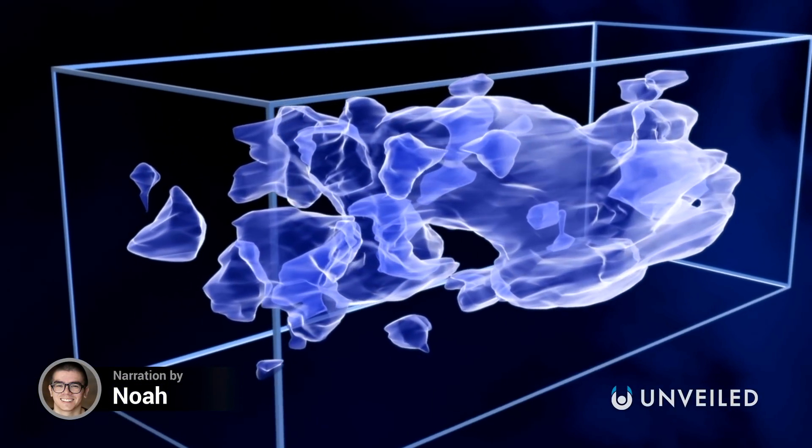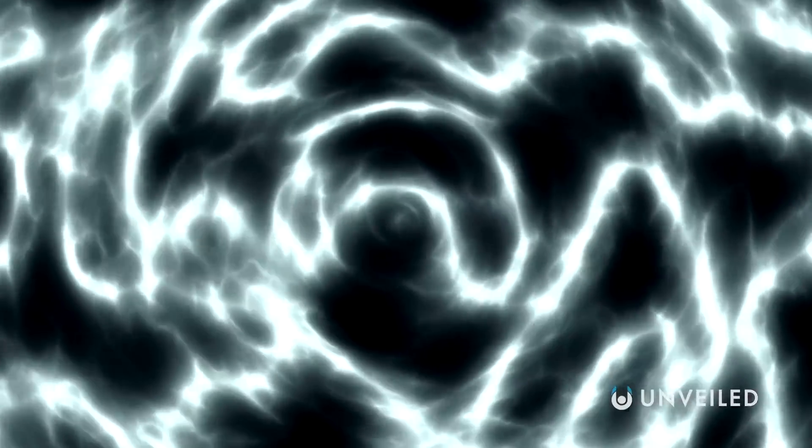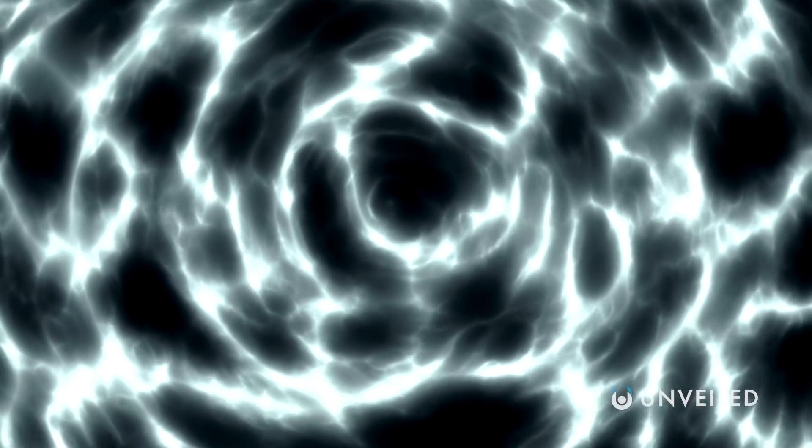Observable, ordinary matter makes up just 5% of the universe. Everything we can see consists of it – all the stars in the sky, all of the planets, every single human being, and all the food you've ever eaten.